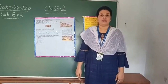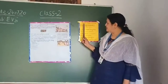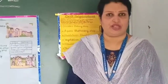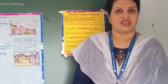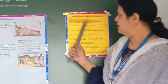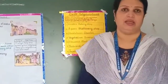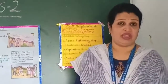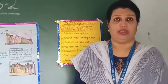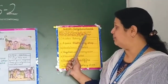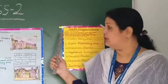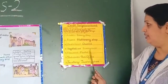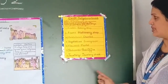Today we are going to start the lesson, Chapter 7: Neighborhood. Students, look at your book. The first introduction given in the book is: Meetu is going shopping with her mother. We all like to go shopping with our parents. Meetu is going shopping with her mother and given below is a shopping list. Let us have a look at this picture.